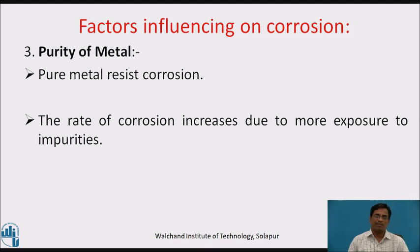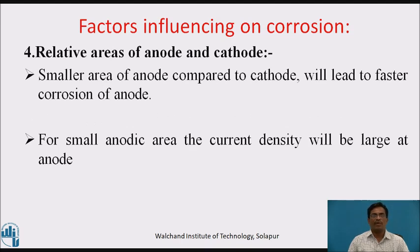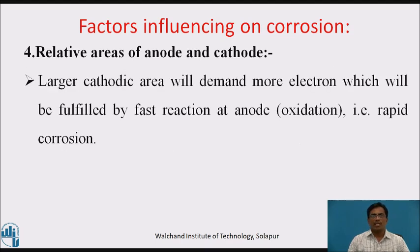Third, purity of metal — pure metal always resists corrosion, and the rate of corrosion increases due to more exposure to impurities. Fourth, relative areas of anode and cathode — a smaller area of anode compared to cathode leads to faster corrosion of the anode. For a small anodic area, the current density will be larger at the anode. A larger cathodic area demands more electrons, which is fulfilled by a fast oxidation reaction at the anode, resulting in rapid corrosion.